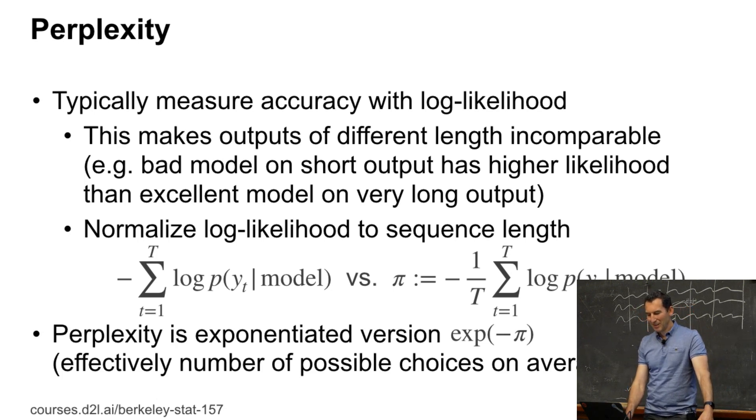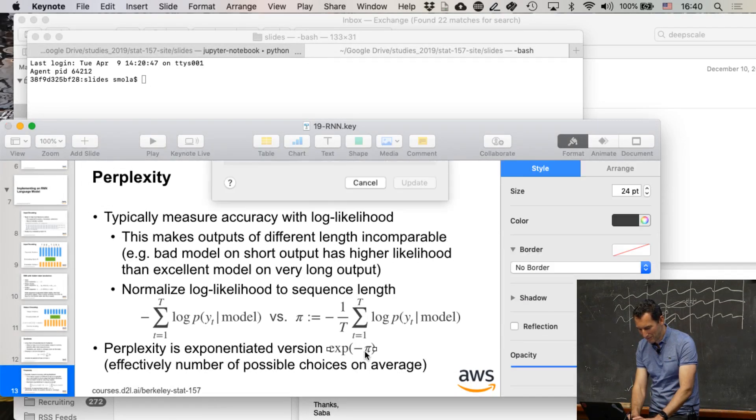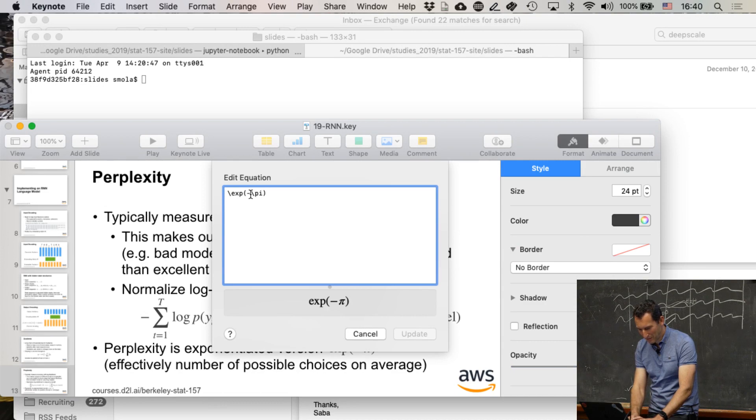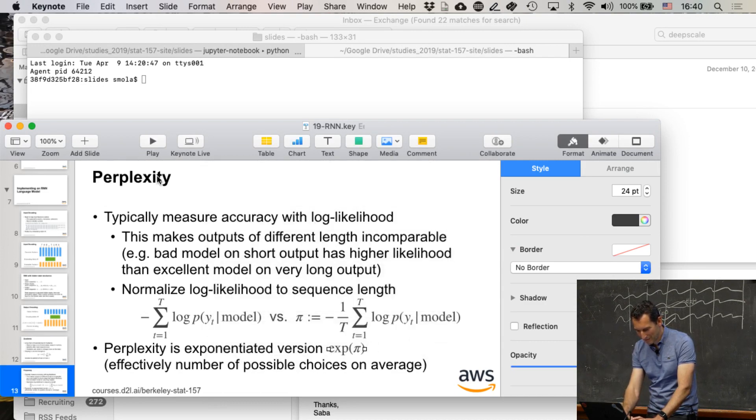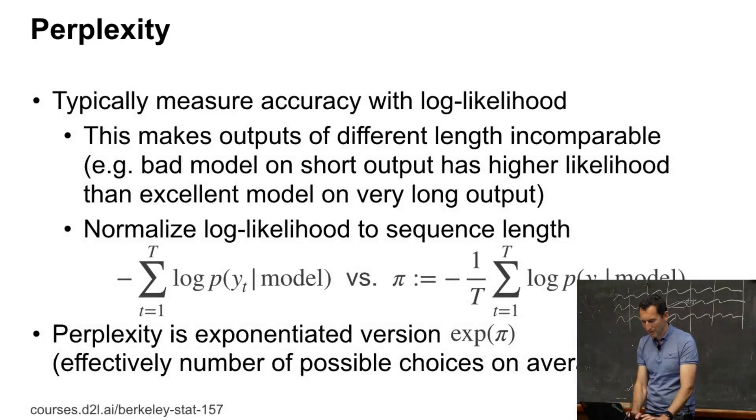Now, perplexity is just the exponentiated version of that. It's actually e to the minus that. The reason is, well actually there's a typo. It should be e to the pi. Because I added the minus. That's what happens if you switch signs later.